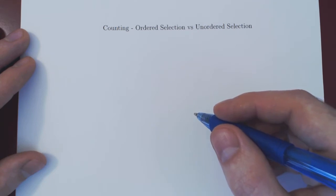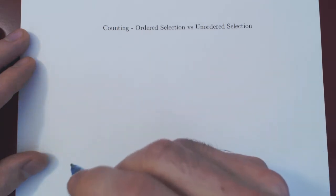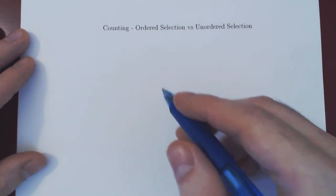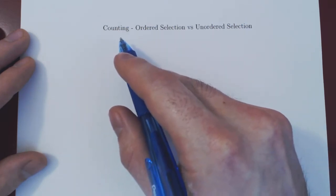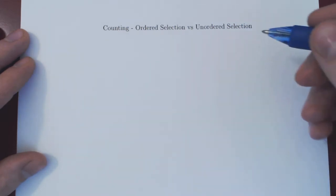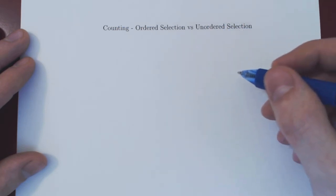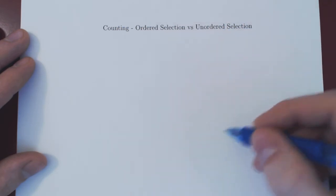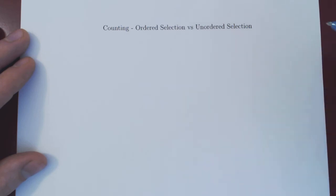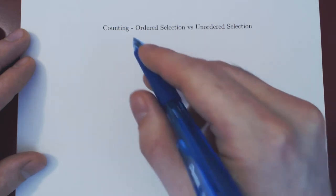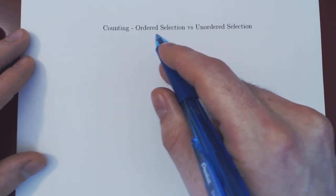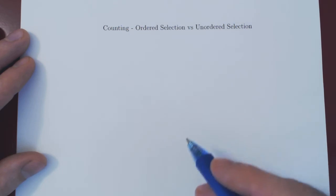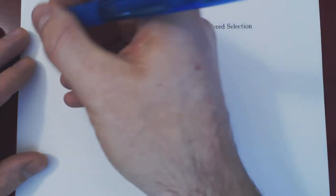In this video we will consider two very simple but fundamental ideas in counting. Here's the first idea — let me give you the setup. We will consider a set of elements, and from this set you will choose a few at random. There are two fundamental ways in which you can perform this selection: ordered selection versus unordered selection.